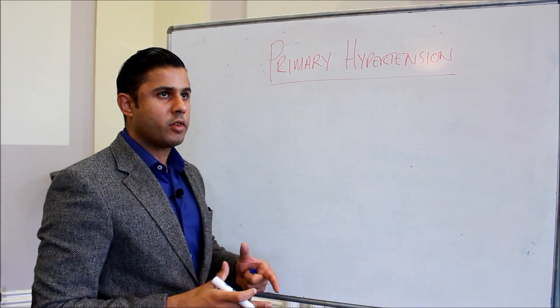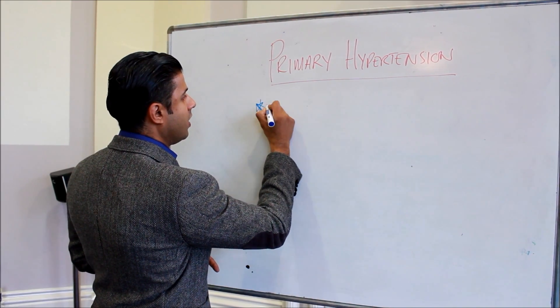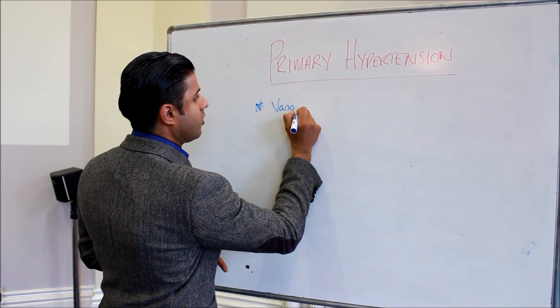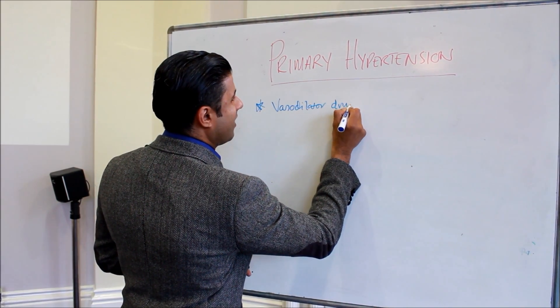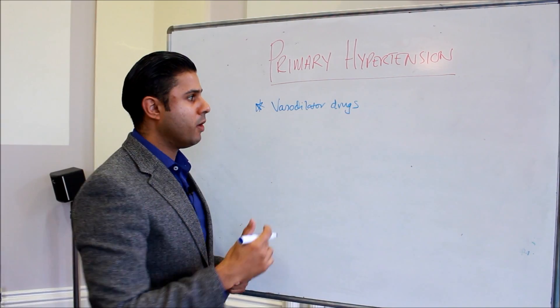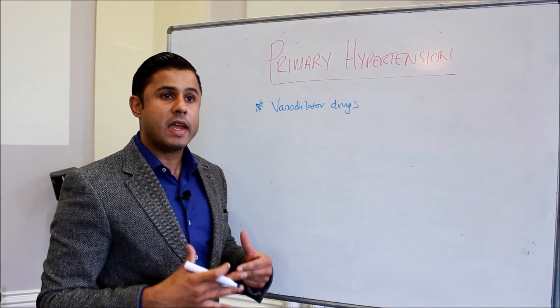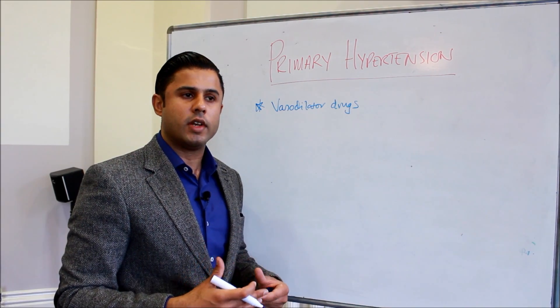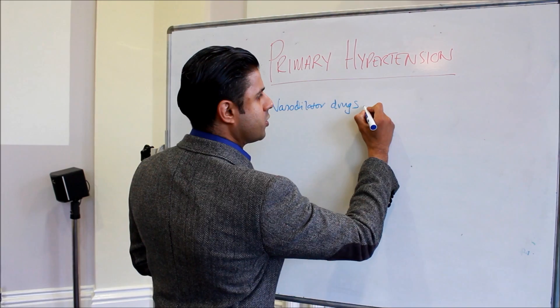Rather than talk about specific drugs, if we just look at general drugs, we've got vasodilator drugs. These drugs actually have a multitude of effects within the body, but if we look specifically about one of the main controllers of hypertension, the activity of the renal system.